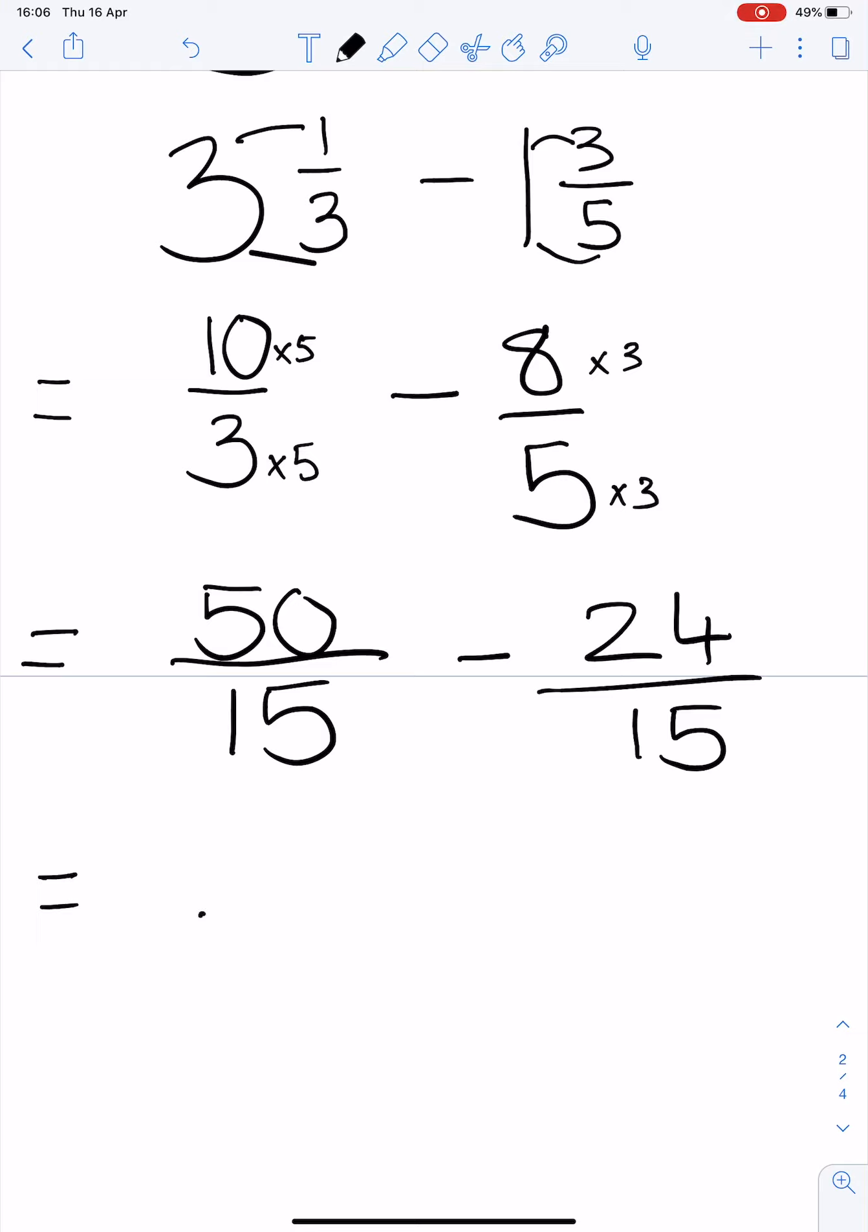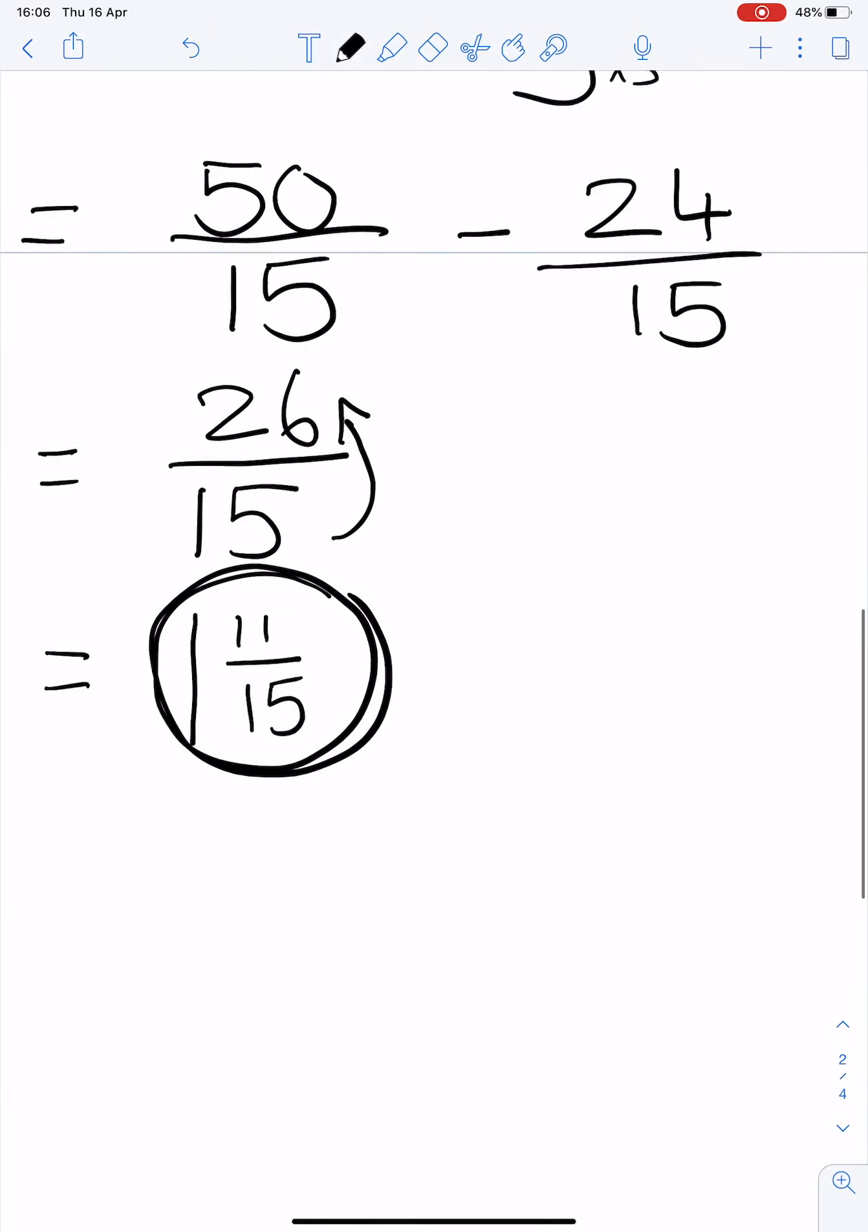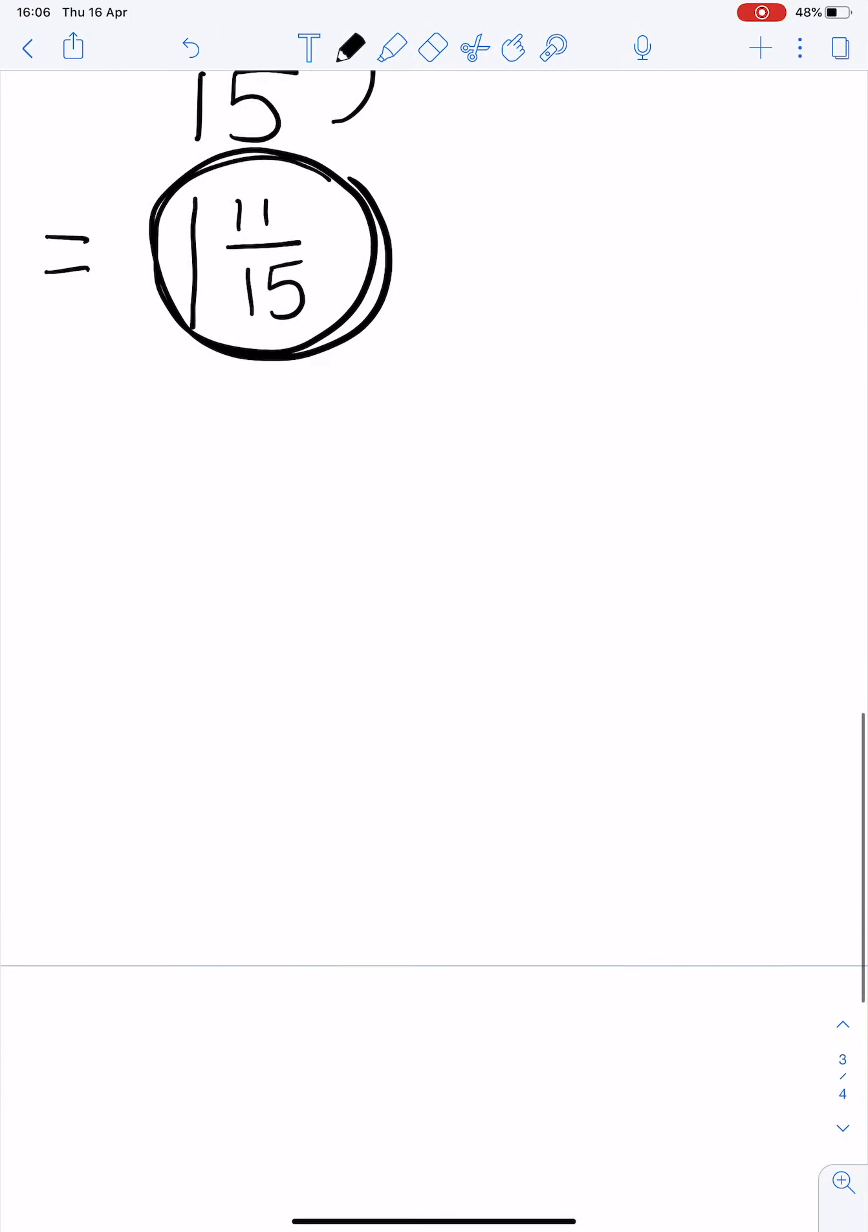So our new sum will look like this: 50/15 minus 24/15. My denominator remains the same. 50 minus 24 is 26. And now I must simplify it. 15 goes into 26 once remainder 11 over 15. And you will notice that this answer is the same as that answer. Different methods, both with the same result. It is up to you to decide which one you prefer.